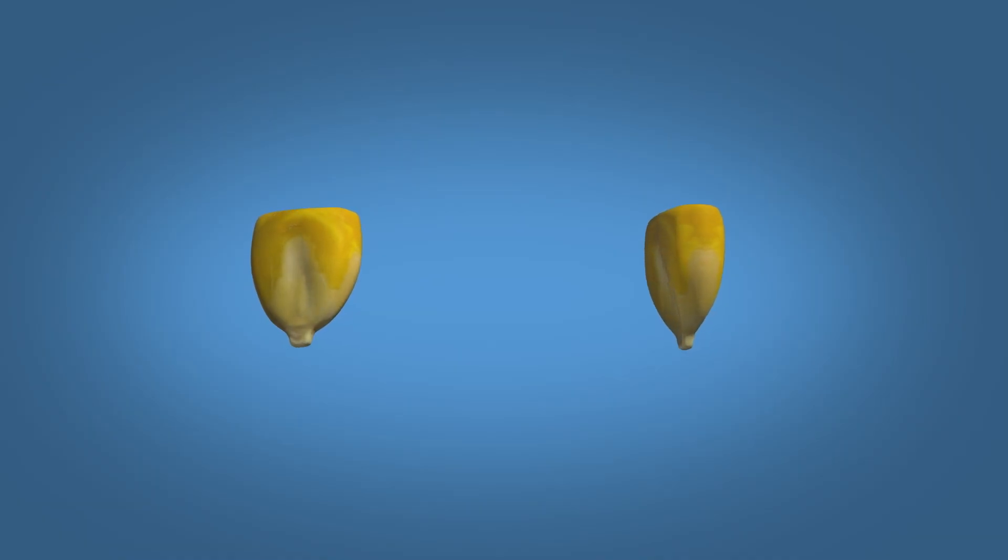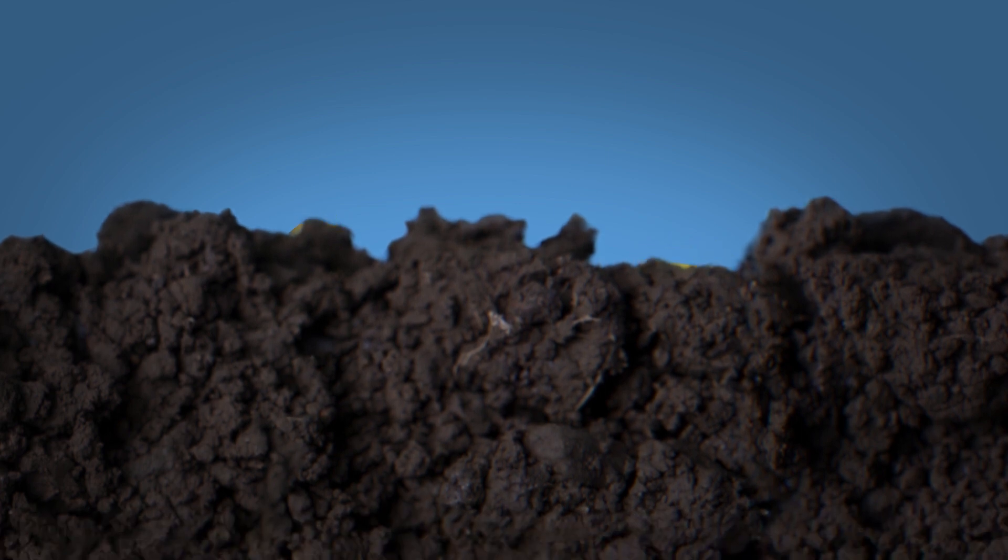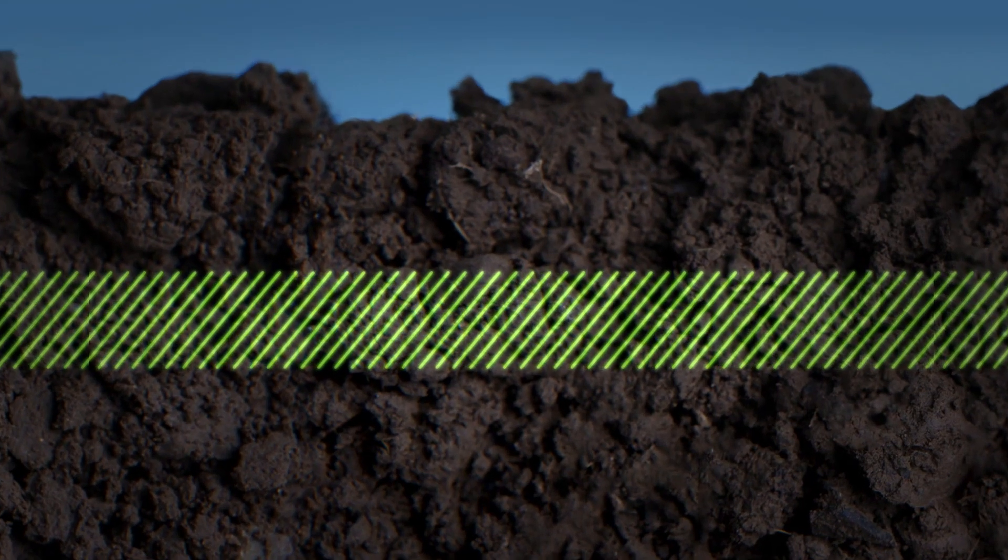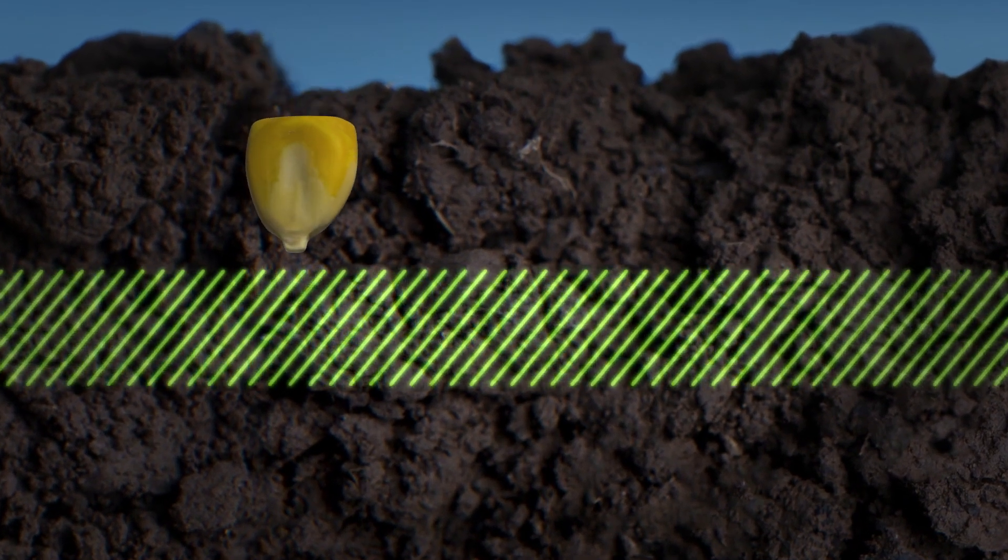Two identical seeds can produce very different results if not planted exactly the same. These are two of the millions of seeds farmers plant each season, and the consistency of their depth and spacing across the entire field is a crucial part of a high yield.